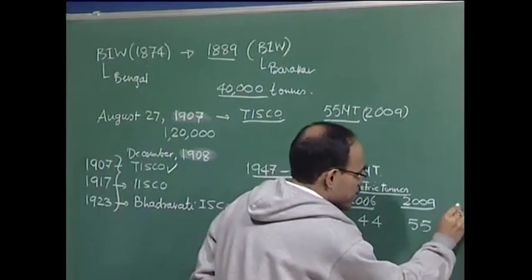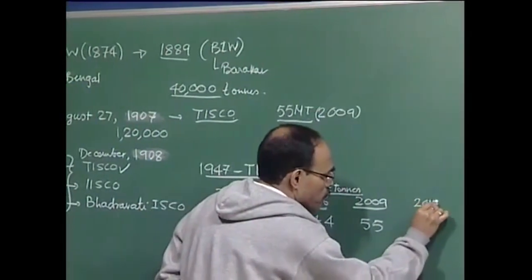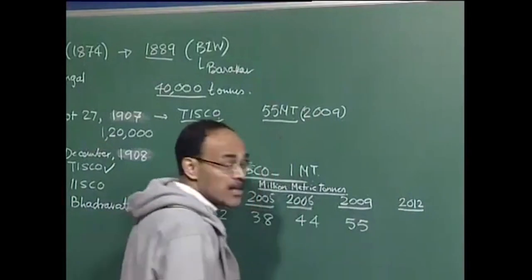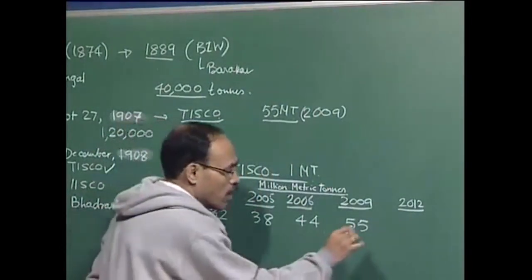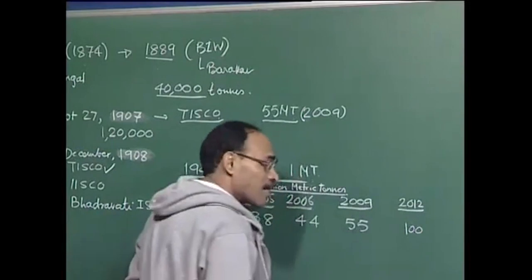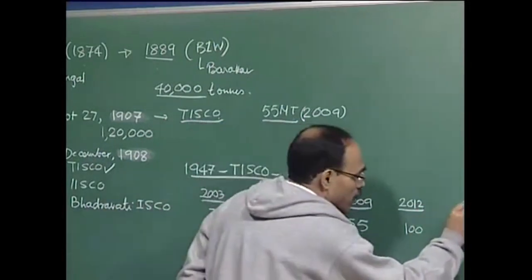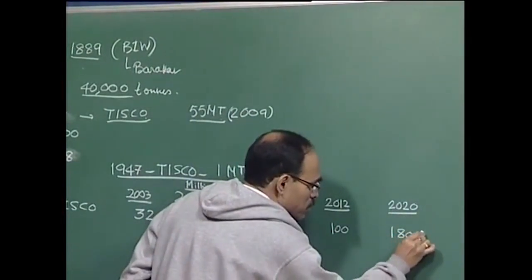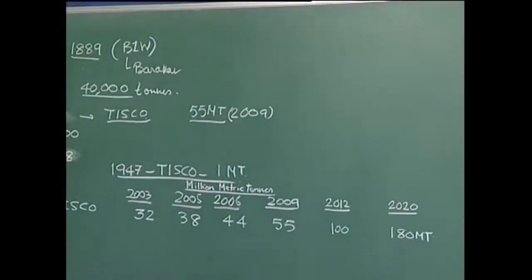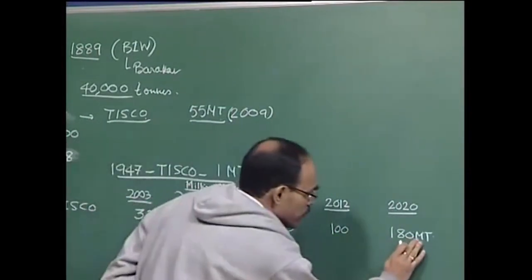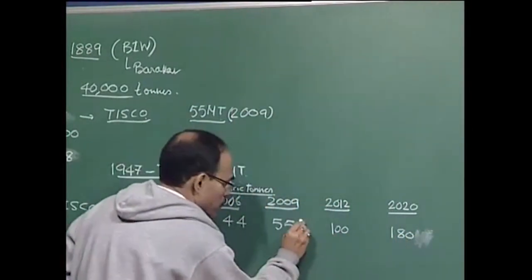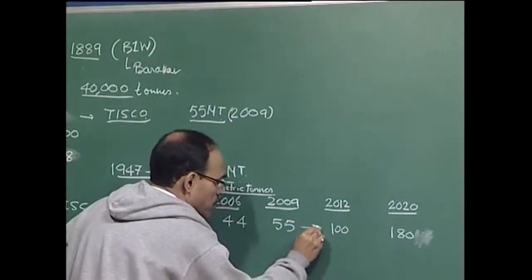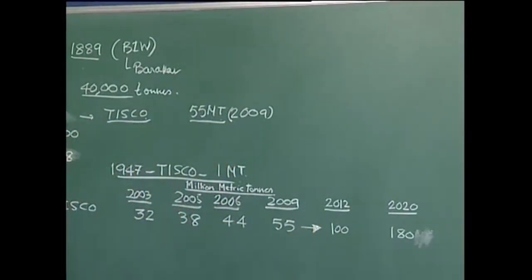The projection from the Ministry of Steel says that by 2012 we are going to produce around 100 to 110 million tons of steel, and by 2020 we are talking about 180 million tons. The recent figures are real data, and 2012 and 2020 figures are the projections.